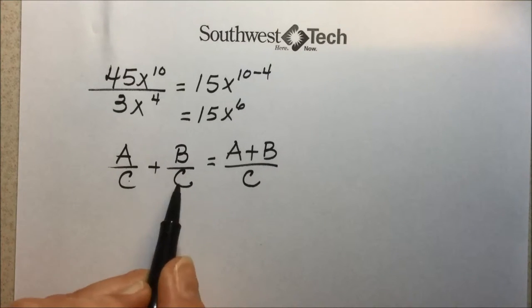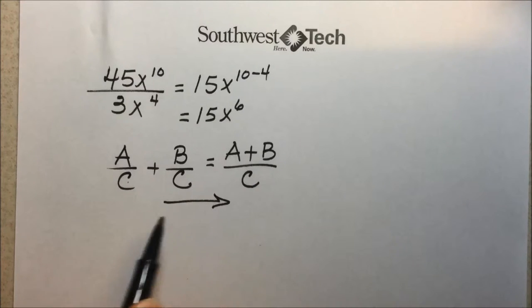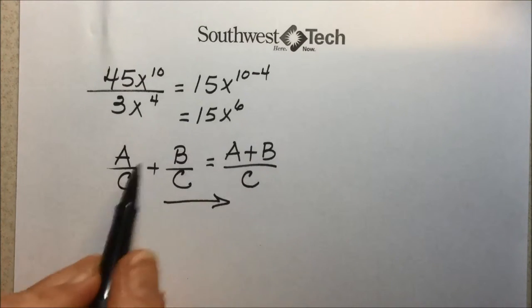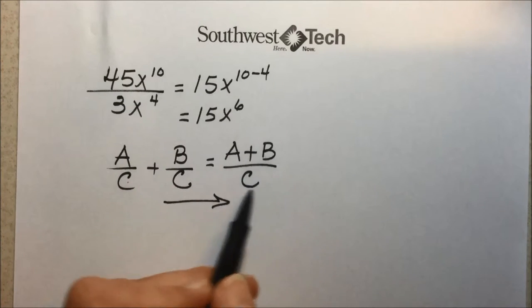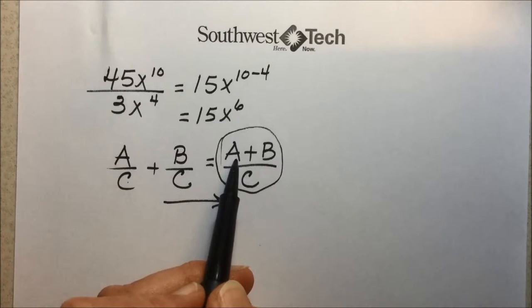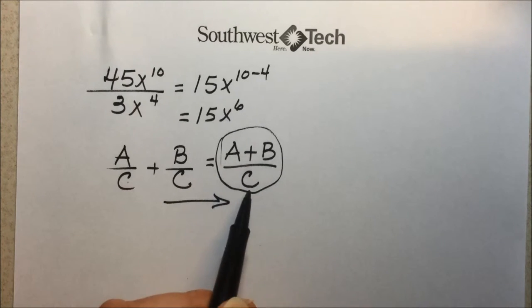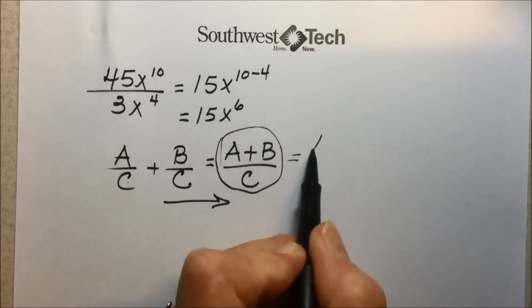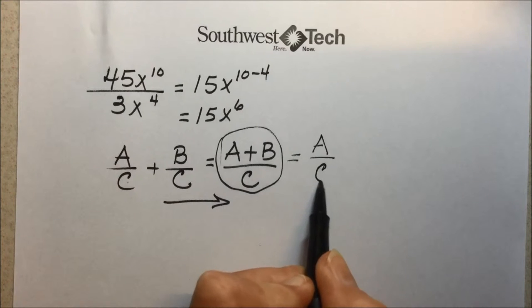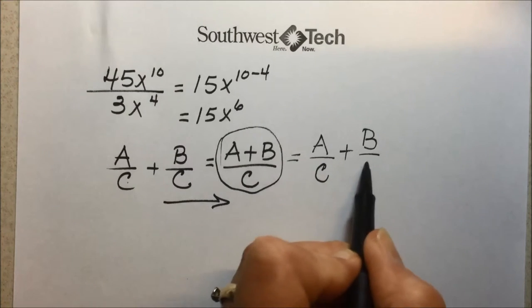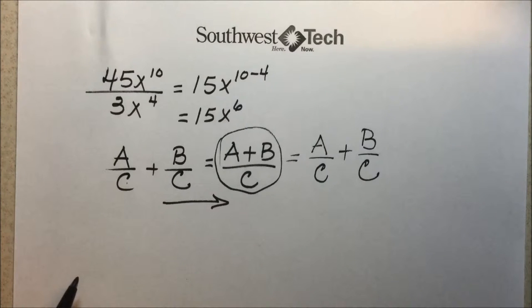Typically, when we're adding rational numbers, we go this direction. But we're also going to flip this around and recognize that if we start with a polynomial divided by a monomial, we can separate it into the parts that it came from. A had to have been over C, plus B had to be over C originally for us to have combined them using the rules for adding and subtracting polynomials.